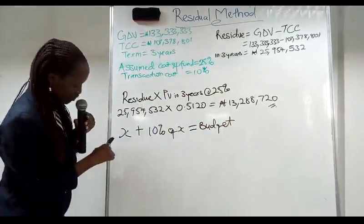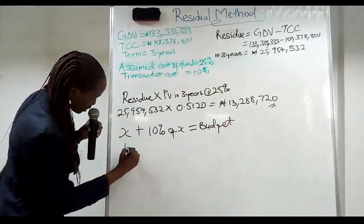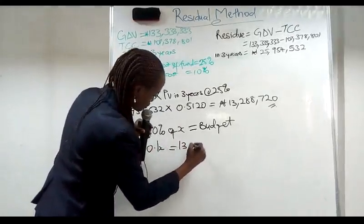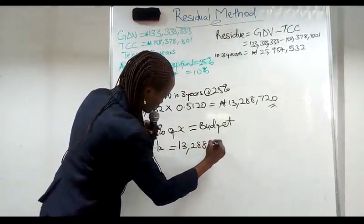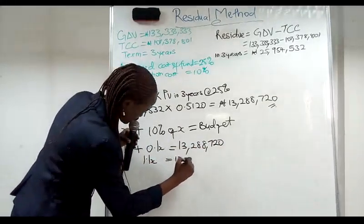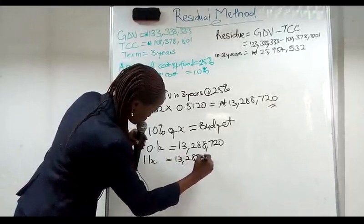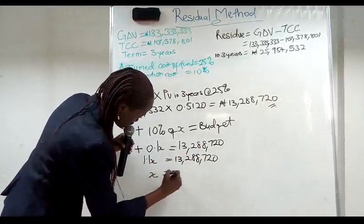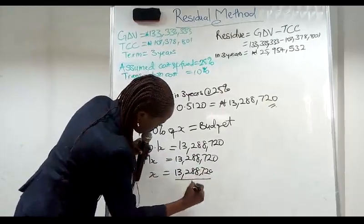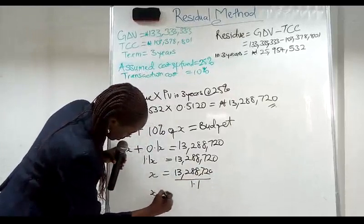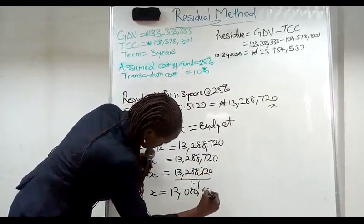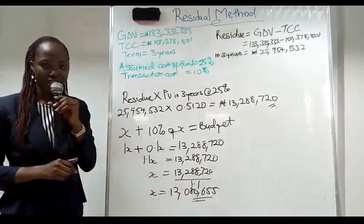There is a coefficient of 1 here. So 1X plus 0.1X equal to 13,288,720. So the addition of this is 1.1X equal to 13,288,720. Therefore our X for 1.1X is 12,086,655. This is our site value. Thank you.